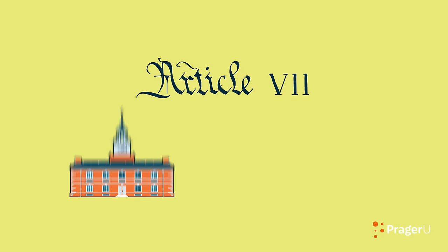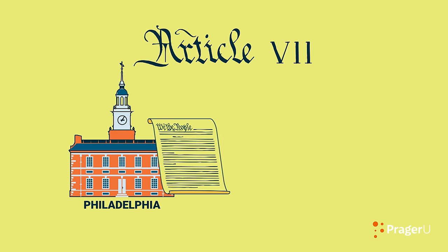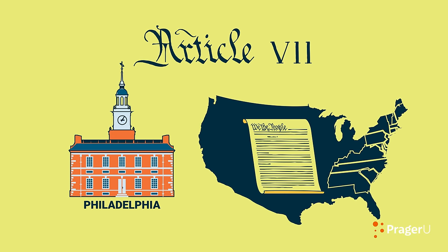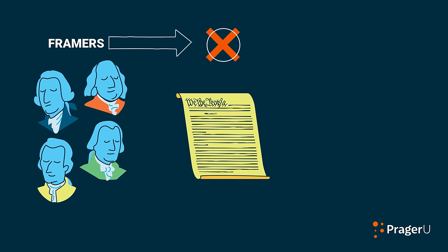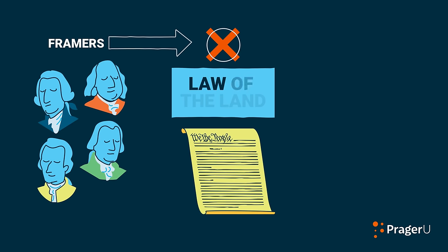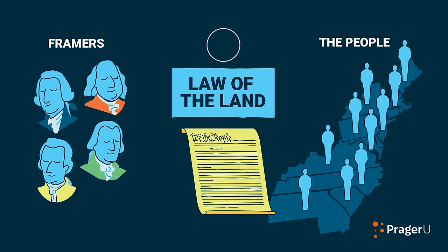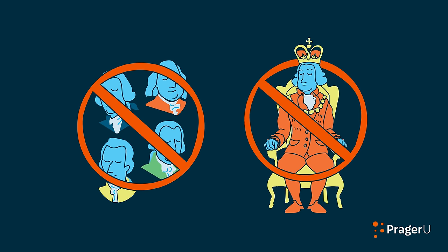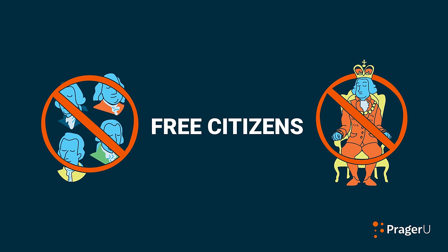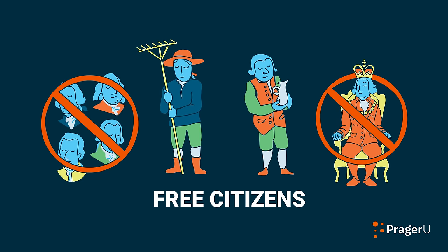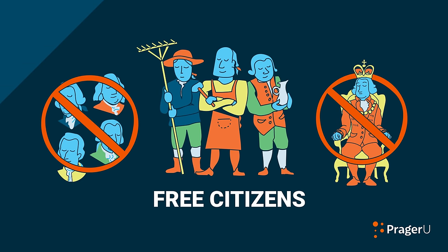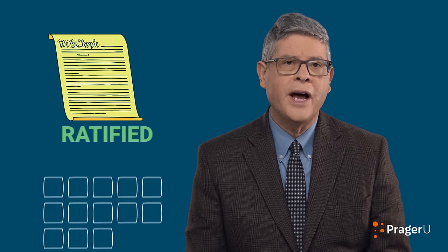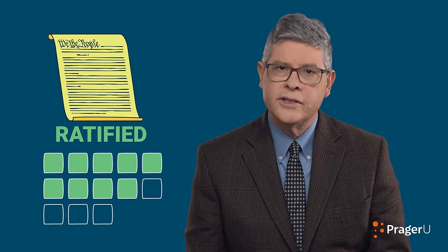Article 7 explains the process by which a document drafted in Philadelphia became the Constitution of the United States. The Philadelphia framers had no authority to make the Constitution the law of the land — that decision was left to the people in the several states. Not an elite group. Not a monarch. But free citizens: the farmer, the shopkeeper, the blacksmith. According to Article 7, the Constitution would not go into effect unless it was ratified by nine of the original thirteen states.